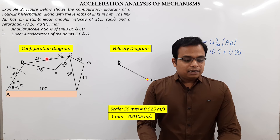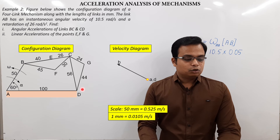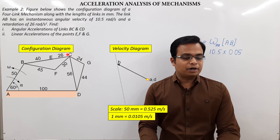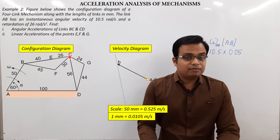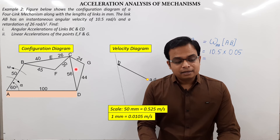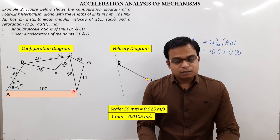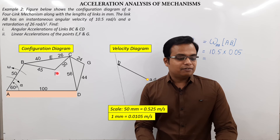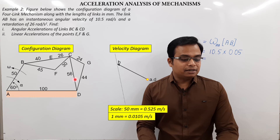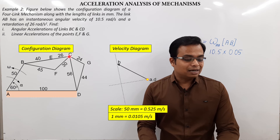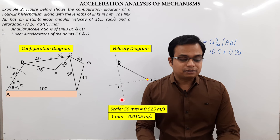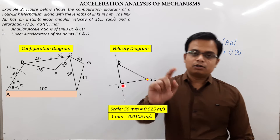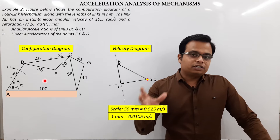The crank is anticlockwise, so the direction of the velocity vector goes in this direction — perpendicular to link AB. The length of this vector is 0.525 m/s, taken as 50 mm, giving us point B. For point C: perpendicular to link BC gives the velocity vector direction, and somewhere along this line there will be point C. With respect to point D, we draw a line perpendicular to link CD. The intersection gives point C. Velocity diagram is done.